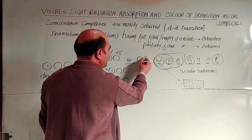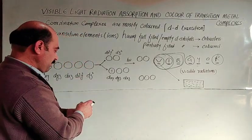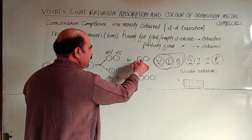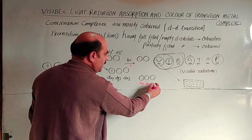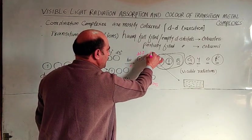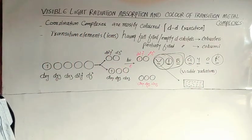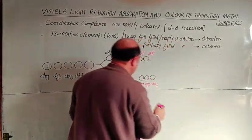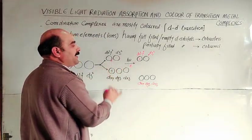When it returns, there are two at greater energy and three at lower energy. Absorption of radiation or absorption of energy promotes the electron from one d-orbital to another. This is DXY, DYZ, DXZ, DX square minus Y square, and this one is DZ square.